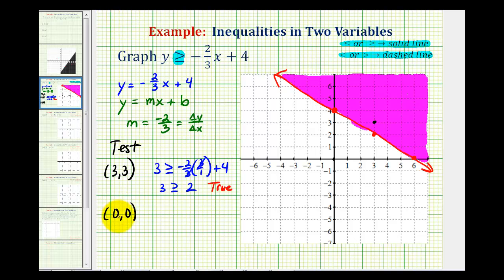And let's also test to make sure (0, 0) does not satisfy this inequality. So we would have 0 is greater than or equal to negative 2/3 times 0, that's going to be 0, plus 4. So we have 0 is greater than or equal to positive 4, which is not true or it's false.